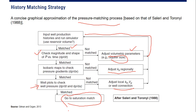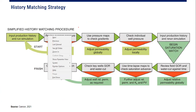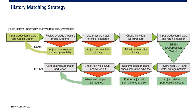This is another simplified procedure. First input production history and run simulation, then review the average pressure profile versus time. If it doesn't match, adjust for volume and compressibility and start again. Then use a pressure map to check gradient — if not matched, adjust permeability. Then check individual well pressure; if not matched, adjust local permeability.